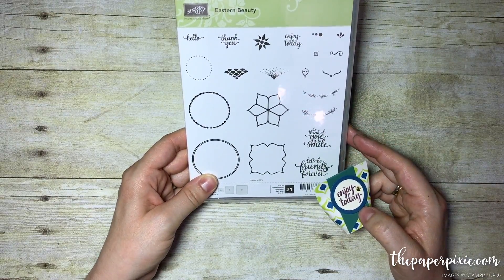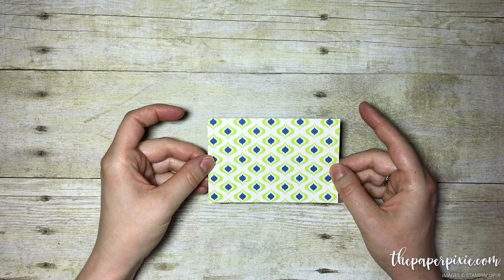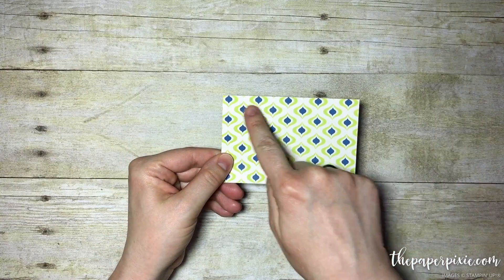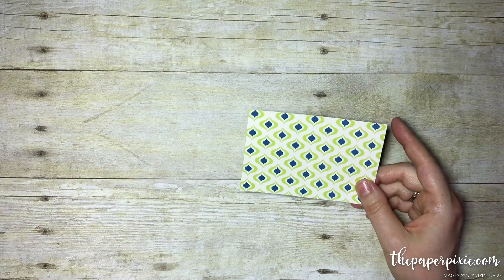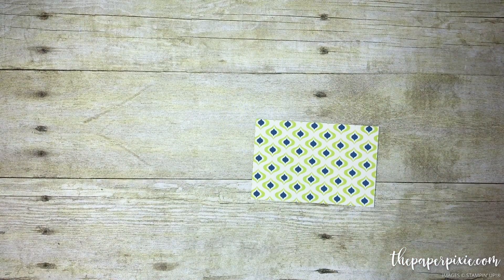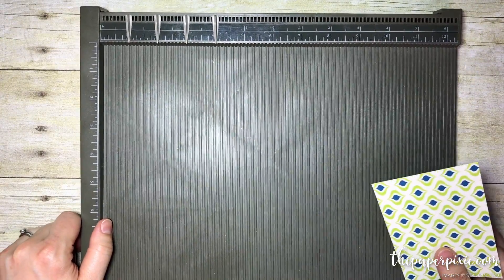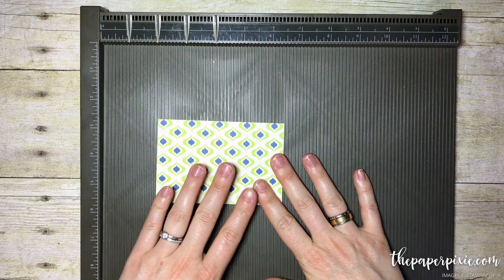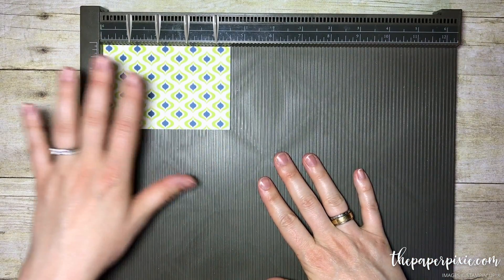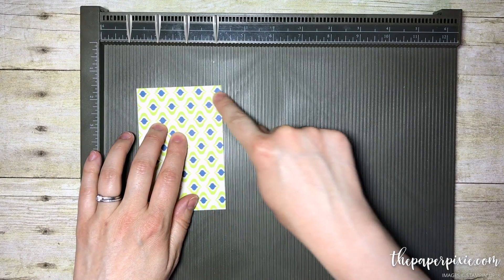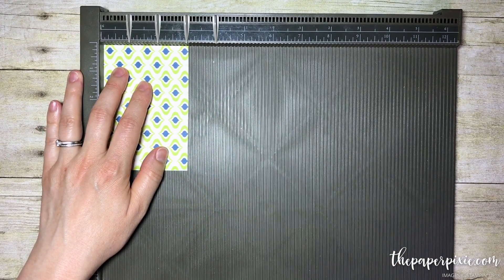The stamp set we're showcasing is called Eastern Beauty, which will also be available starting May 1st. We're going to start with a piece of designer series paper that measures 3 inches by 4.5 inches. We're going to use our Simply Scored, which is in the top five of my favorite tools.